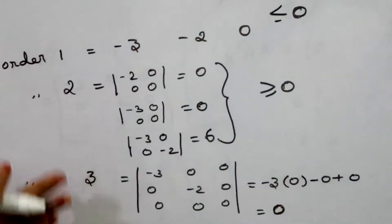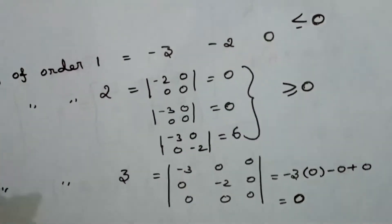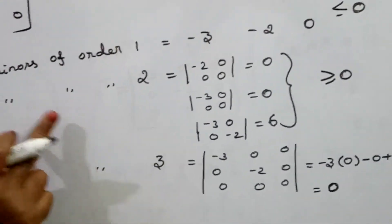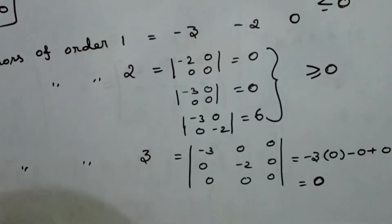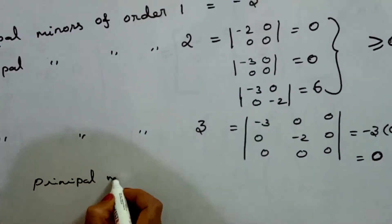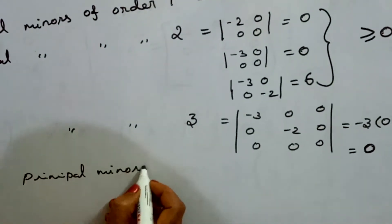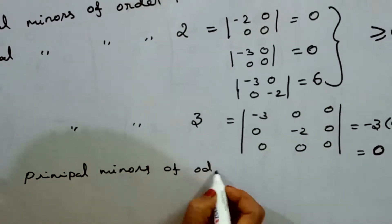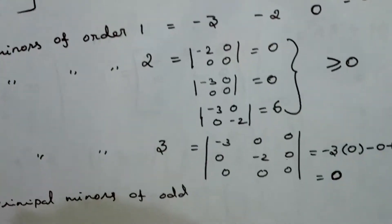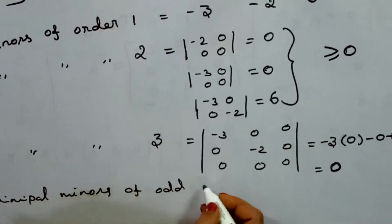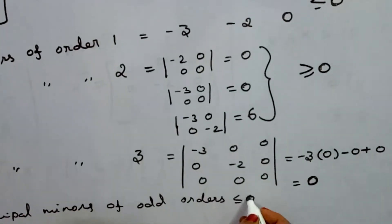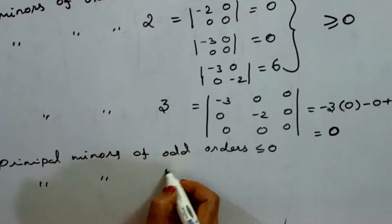Summarizing the principal minor rule: for a semi-negative definite matrix, principal minors of odd orders must be less than or equal to 0, and principal minors of even orders must be greater than or equal to 0. Odd orders (1, 3, 5, 7, ...) satisfy ≤ 0, and even orders satisfy ≥ 0.